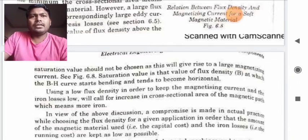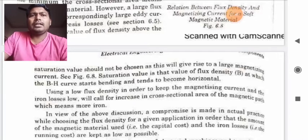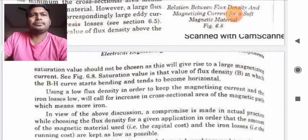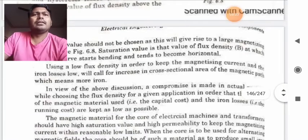Using a low flux density in order to keep the magnetizing current and the iron loss low will call for increase in cross sectional area of the magnetic path which means more iron. In view of the above discussion, a compromise is made in actual practice while choosing flux density for a given application in order that the amount of magnetic material used and the iron losses are kept as low as possible. So this is the compromise made while choosing a material.